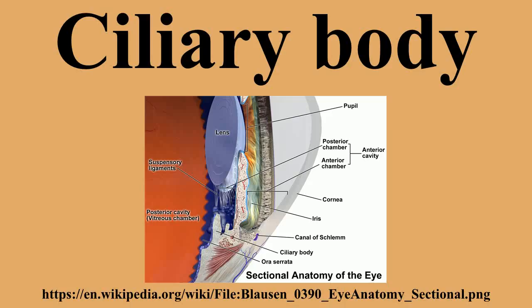The outer layer is highly pigmented, continuous with the retinal pigment epithelium, and constitutes the cells of the dilator muscle. This double membrane is often considered continuous with the retina and a rudiment of the embryological correspondent to the retina. The inner layer is unpigmented until it reaches the iris, where it takes on pigment. The retina ends at the ora serrata junction.